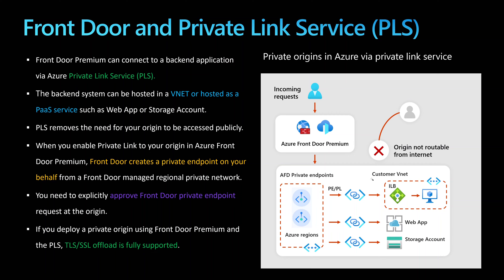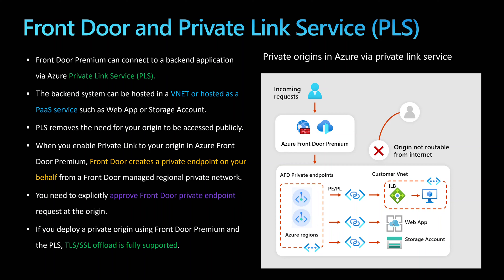How does that work? Your private application — for example, a VMSS, a VM exposed through an internal load balancer, a web app injected into a virtual network, a storage account, or an AKS cluster — will be exposed through the Private Link Service. This enables the creation of a private endpoint by Azure Front Door, which is attached to Azure Front Door's managed virtual network and connects to your PLS, which then connects to your private resource. This feature is available with Azure Front Door Premium, and you need to approve the connection from the managed private endpoint to the PLS.